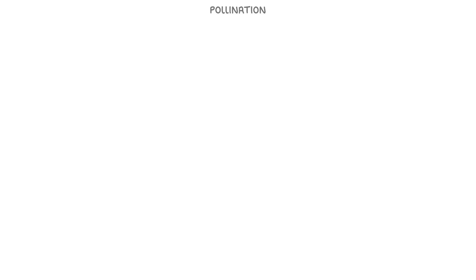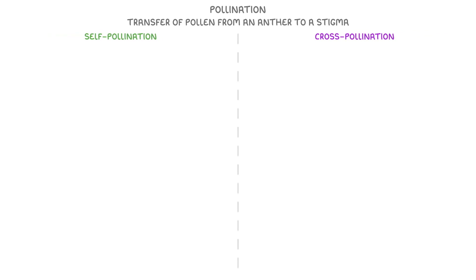Next up, let's take a look at the different types of pollination. Pollination itself can be defined as the transfer of pollen from an anther to a stigma, which allows fertilisation to occur. There are two main types of pollination: self-pollination and cross-pollination.